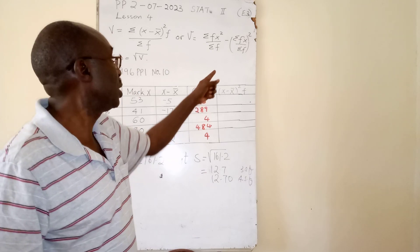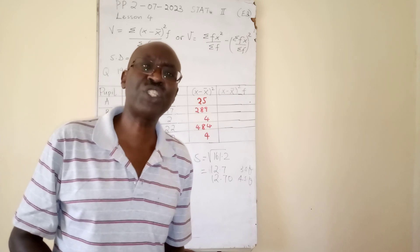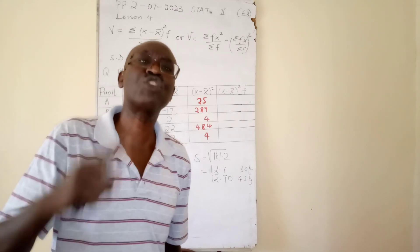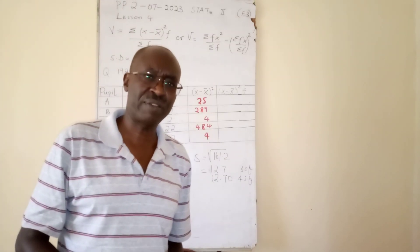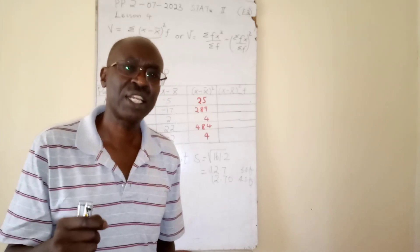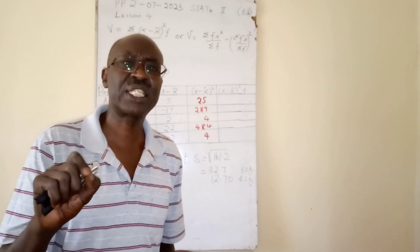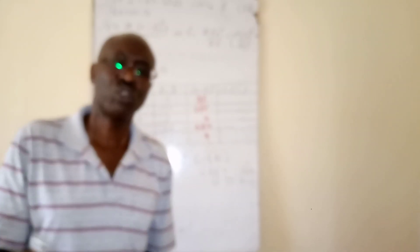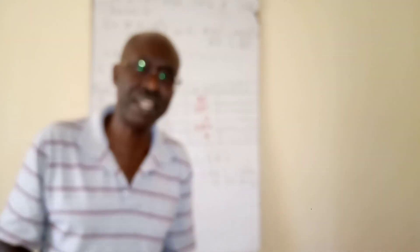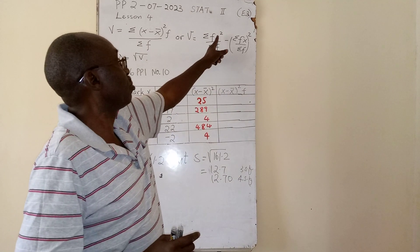The second formula is very handy when you are given a question that requires mean from assumed mean. You have to get deviation. Deviation is equal to x, the data given, minus capital A standing for assumed mean. Anytime you take x you subtract assumed mean, you will get deviations.